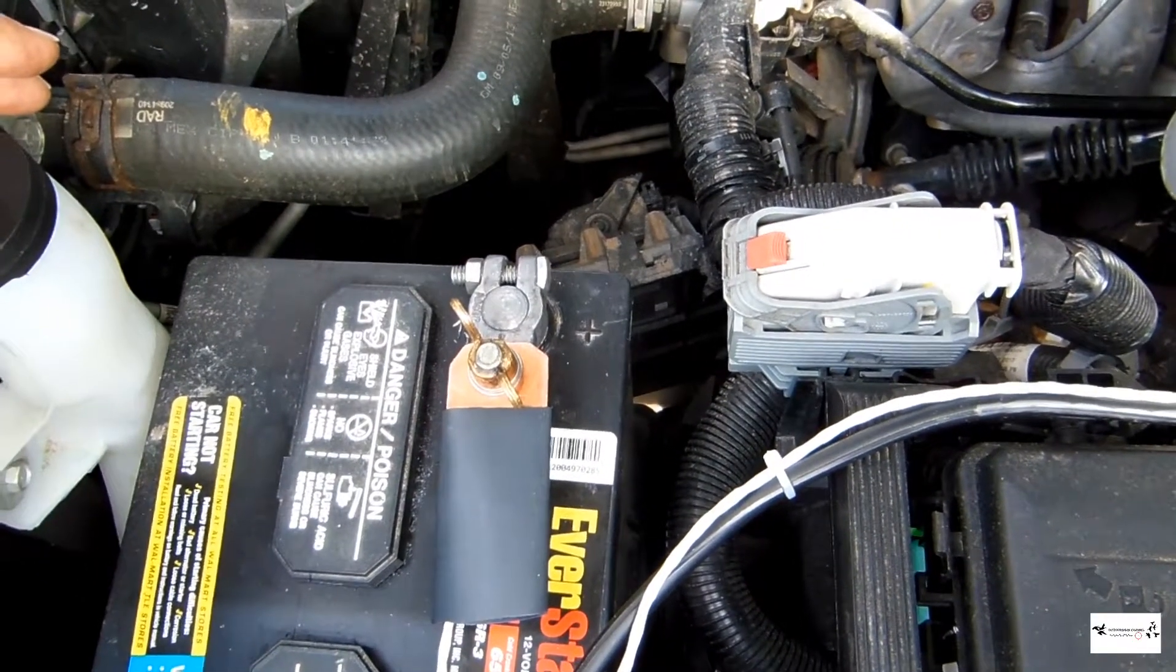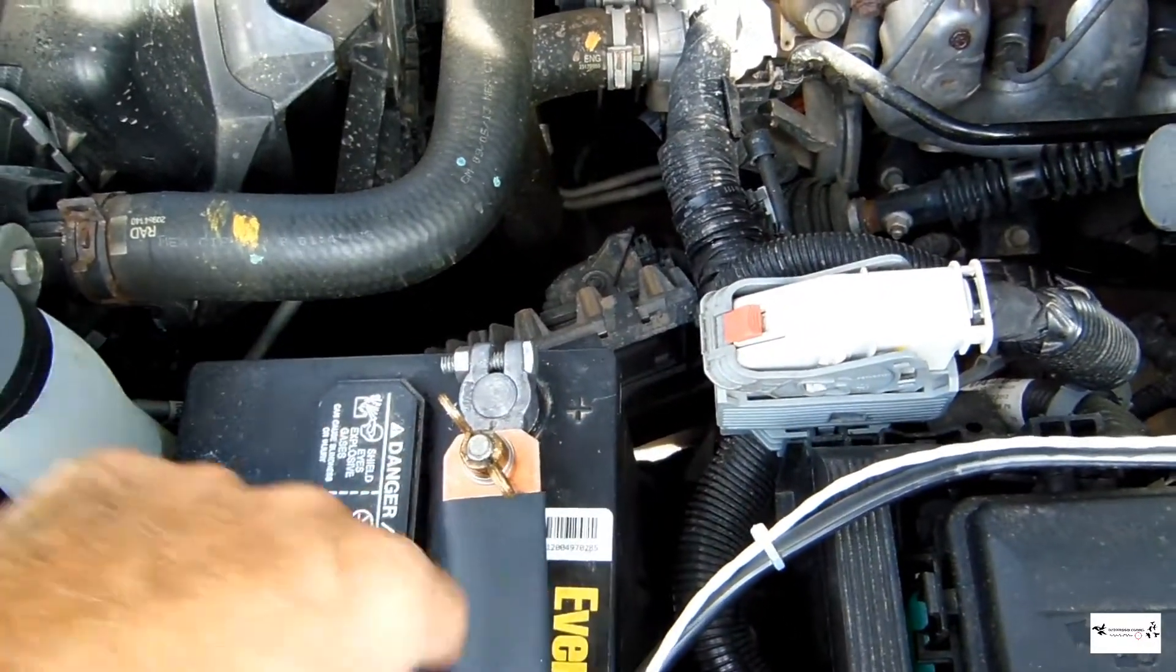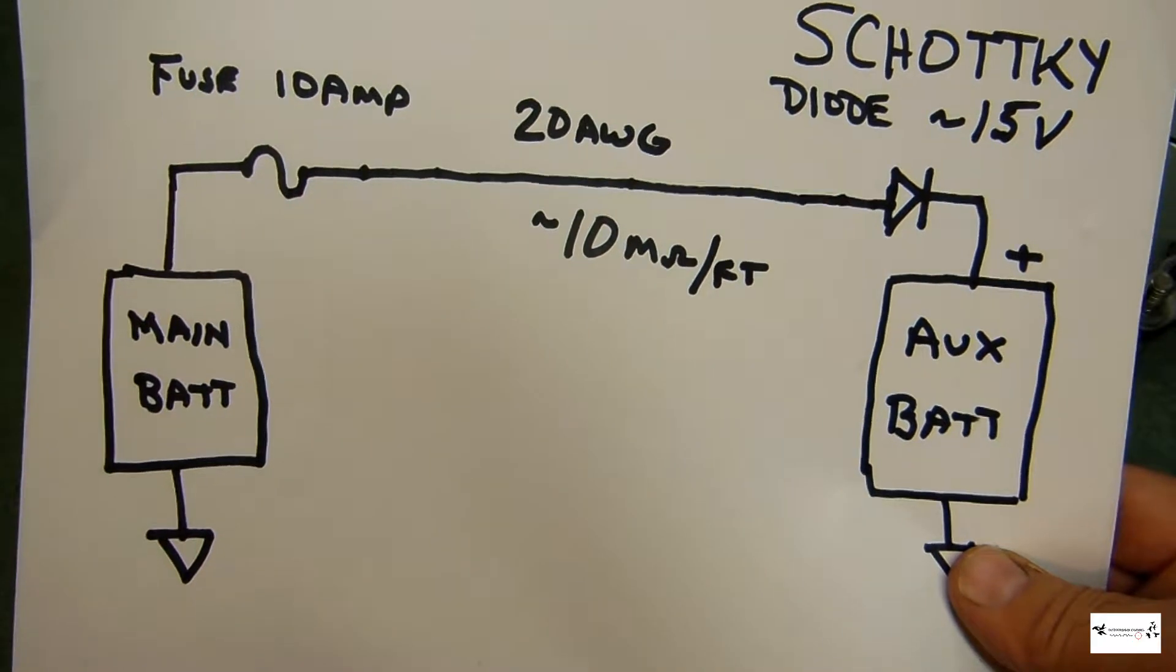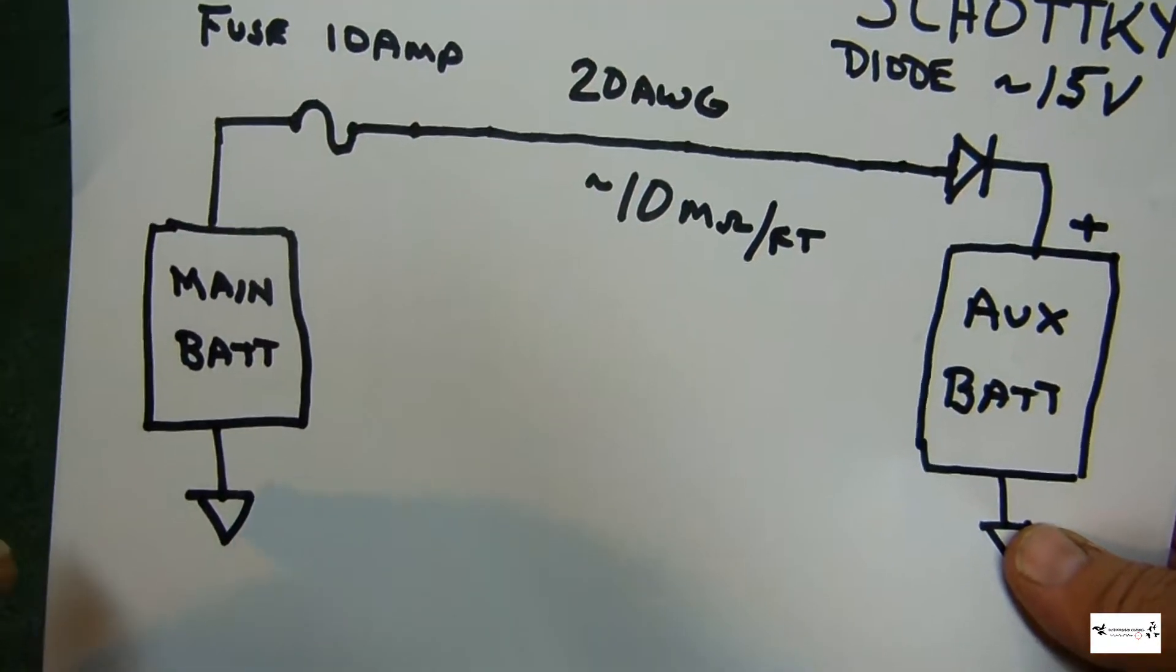Next I'm going to show you a test where I actually start the vehicle and see how much current comes through this wire into the auxiliary battery. I want to talk to you a little bit about the circuit that we're using for this charger. This is a diagram or schematic of the circuit.